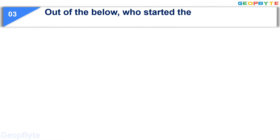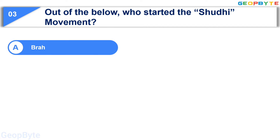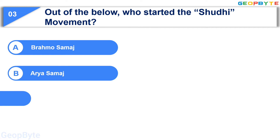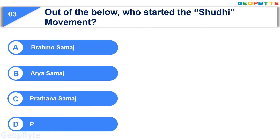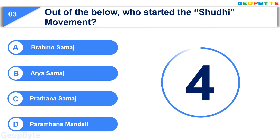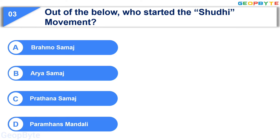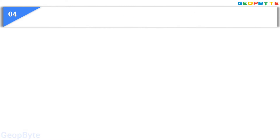Moving to the third question: out of the below, who started the Shuddhi movement? Option A: Brahmo Samaj, Option B: Arya Samaj, Option C: Prarthana Samaj, Option D: Paramahansa Mandali. Your time starts now. Your time is up and the correct answer is Option B: Arya Samaj.